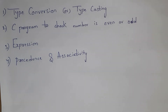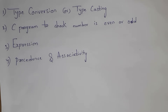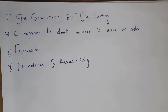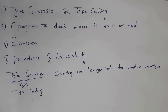Hi guys, welcome to my channel. In this video I will be covering what is type conversion, a C program to check whether a number is even or odd, and also I will explain what is an expression and what is precedence and associativity. I have uploaded complete C language subject tutorials — link in description. If you are watching this video for the first time, don't forget to like, share and subscribe. Let's get started.